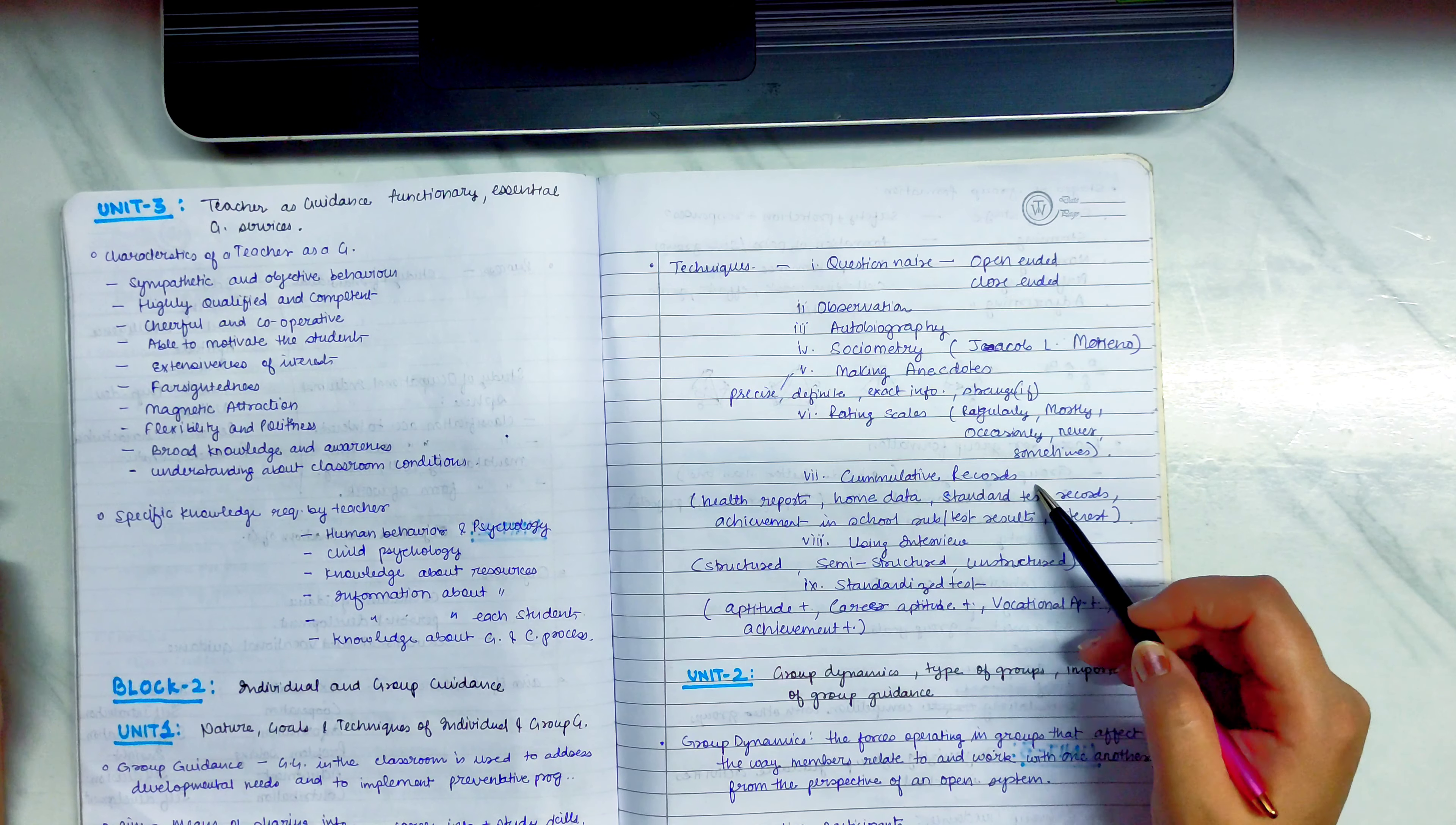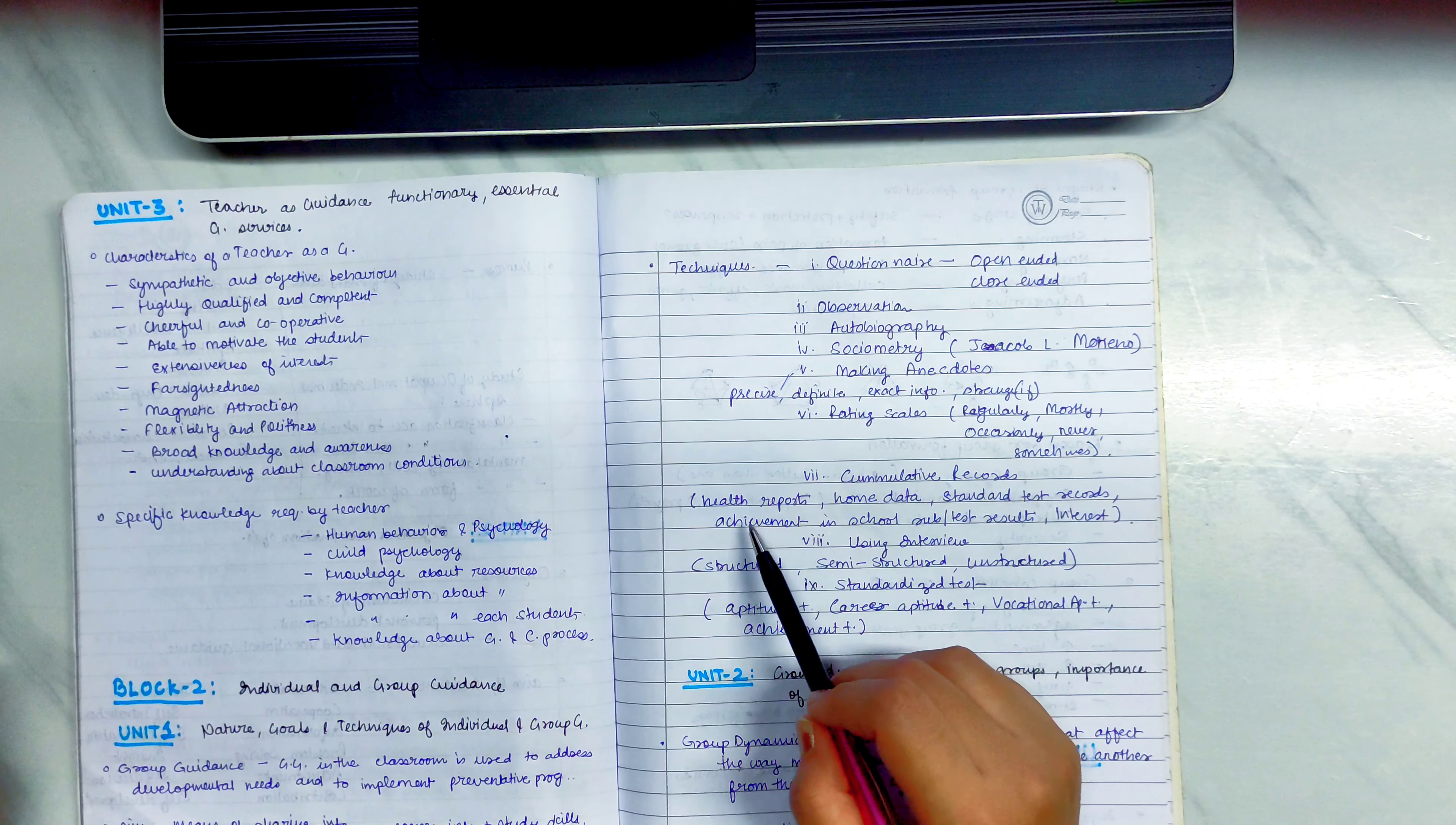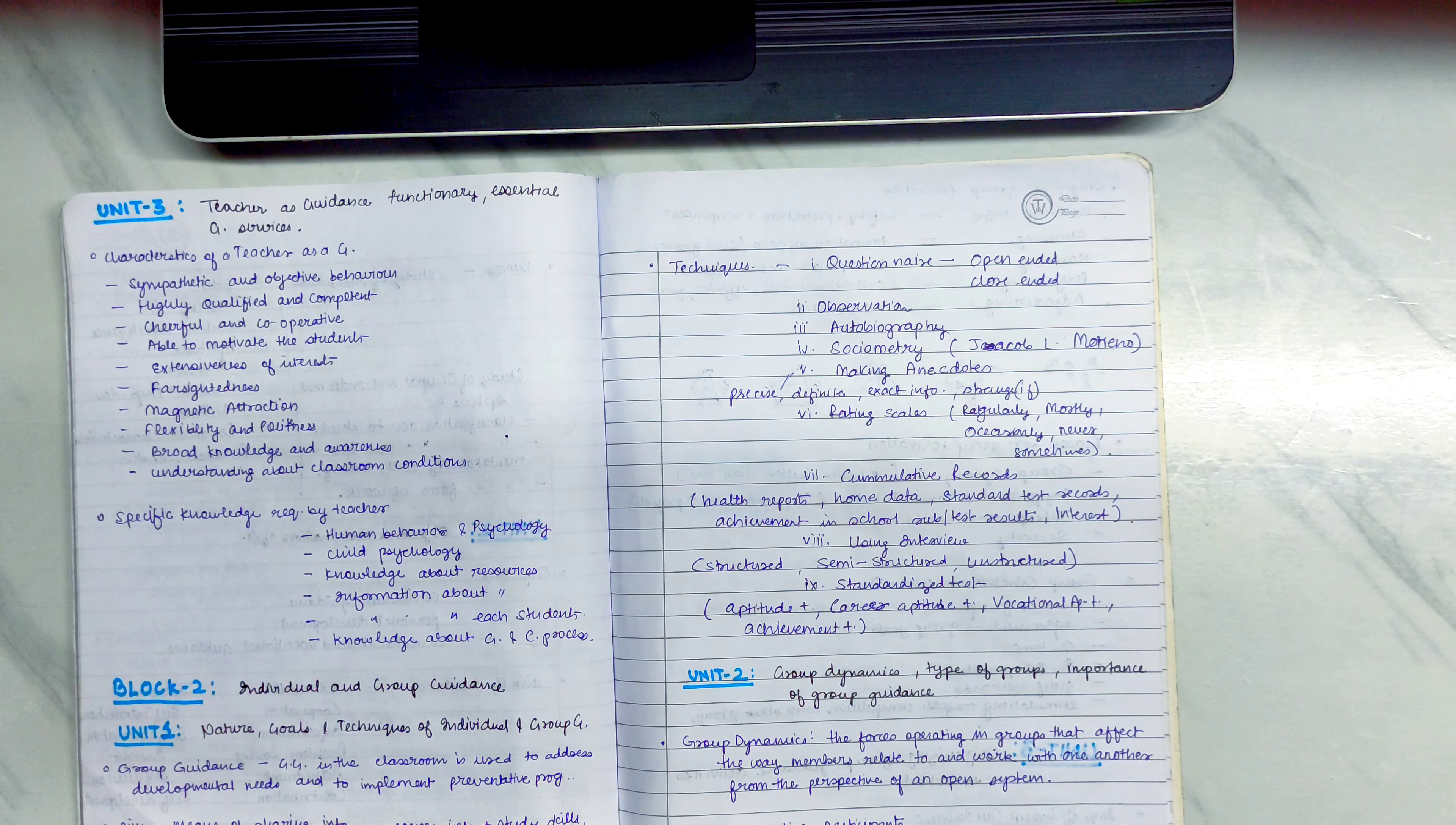Seventh is Cumulative Records. You can check through the child's health report, home data, standard test records, achievement in school, subtest results and interest. You can check through the child's records.